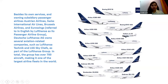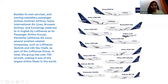In total, the Lufthansa Group has over 700 aircraft, making it one of the largest airline fleets in the world. The company owns most of its aircraft from Boeing as well as Airbus. Other than that, the company also owns some aircraft from Junkers, Embraer, and Bombardier.